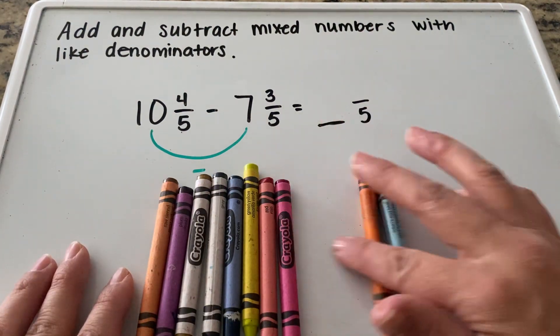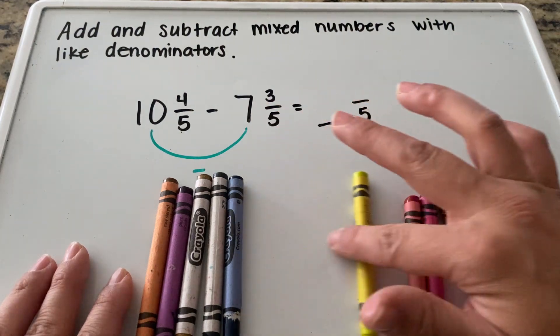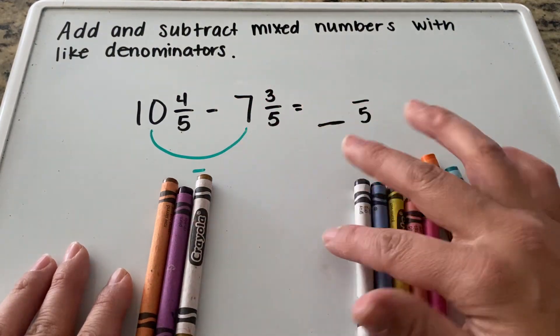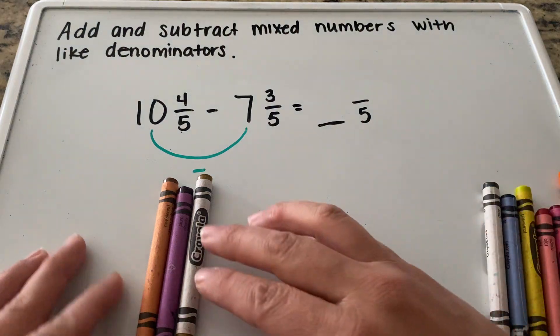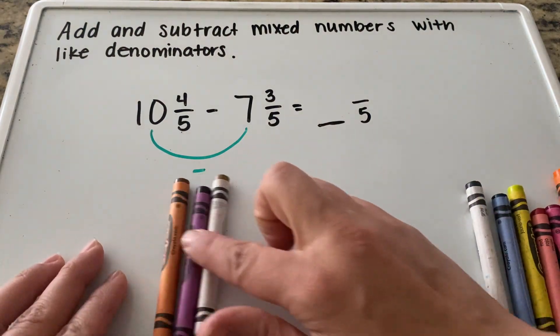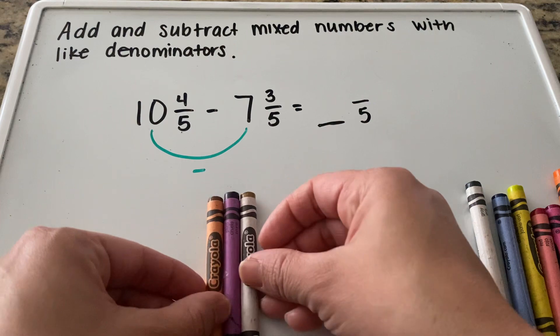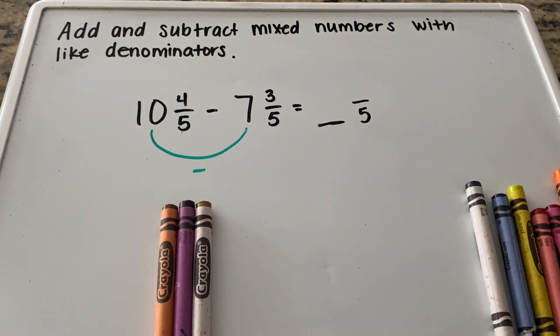One, two, three, four, five, six, seven. How many crayons are left over? One, two, three. So ten minus seven is three.